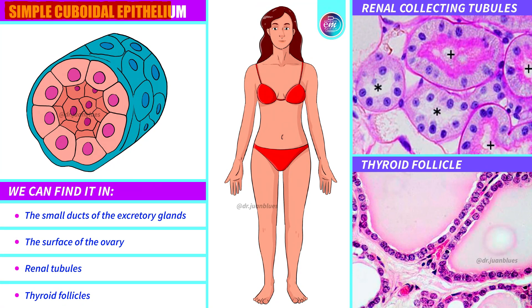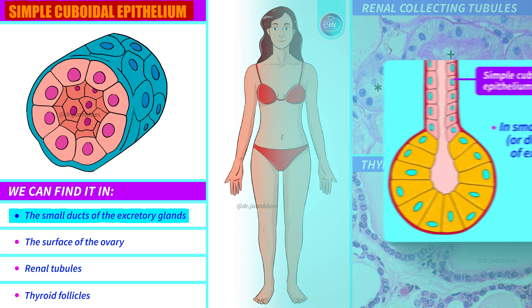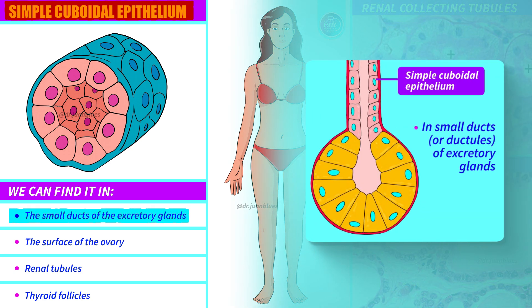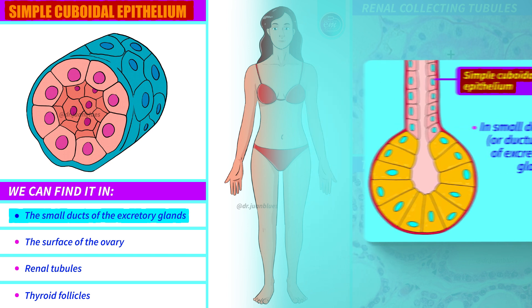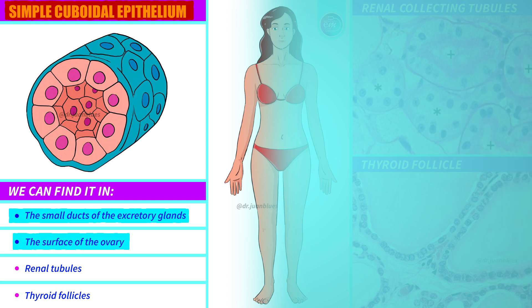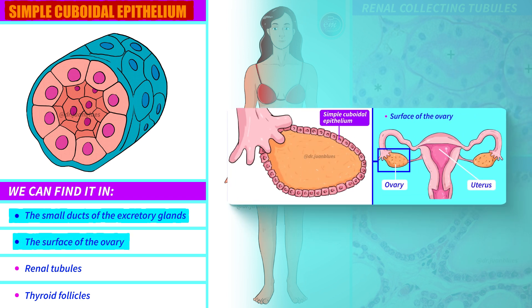Cuboidal simple epithelium. We can find it in the small ducts of the excretory glands — observe how the excretory duct is lined with a single layer of epithelial cells with a cube shape. We can also find it on the surface of the ovary. Here we have the female reproductive system: the uterus, the tubes and the ovaries. Lining the internal surface of the ovary, there is a single layer of epithelial cells in the form of cubes — cuboidal simple epithelia.